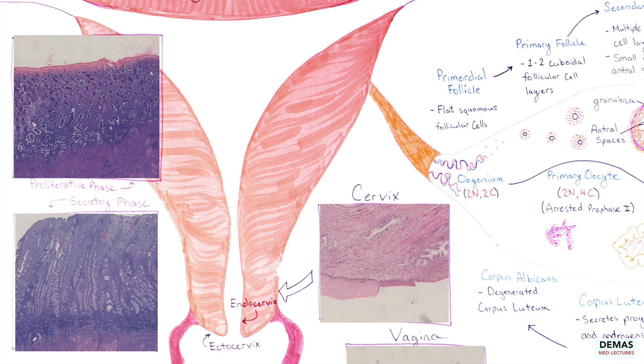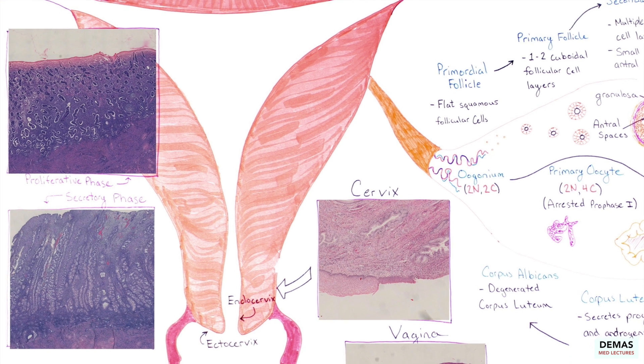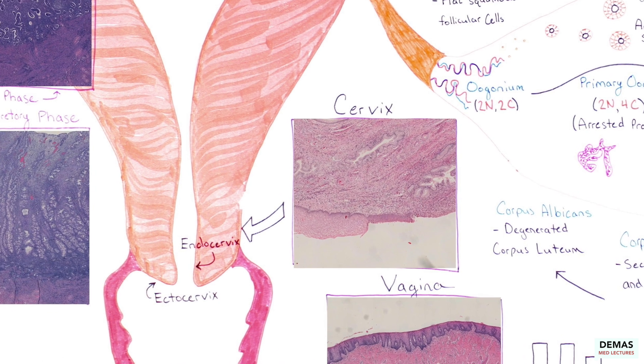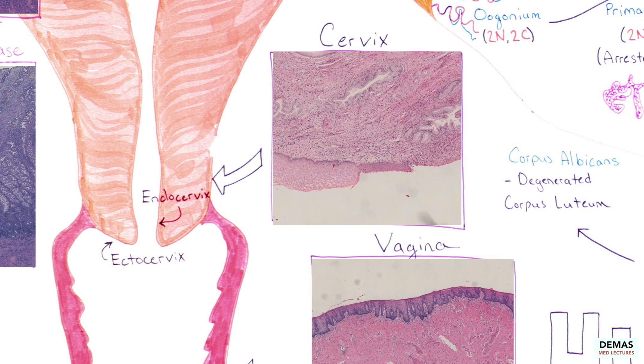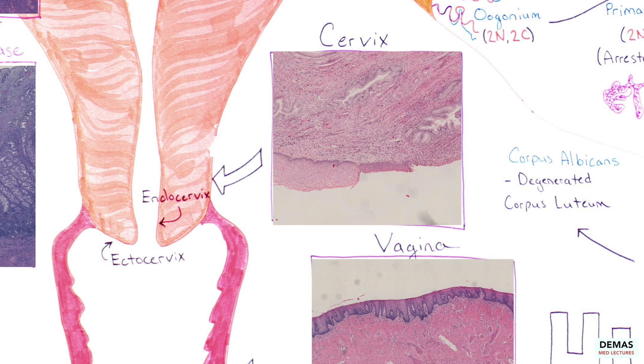For example, the endometrium is proliferating while the follicle develops and after ovulation, which is during the formation of a corpus luteum, the secretory stage occurs within the uterus. Within the cervix, recall the sharp transition between the columnar epithelium of the endocervix and the stratified squamous epithelium of the ectocervix, called the transformation zone.